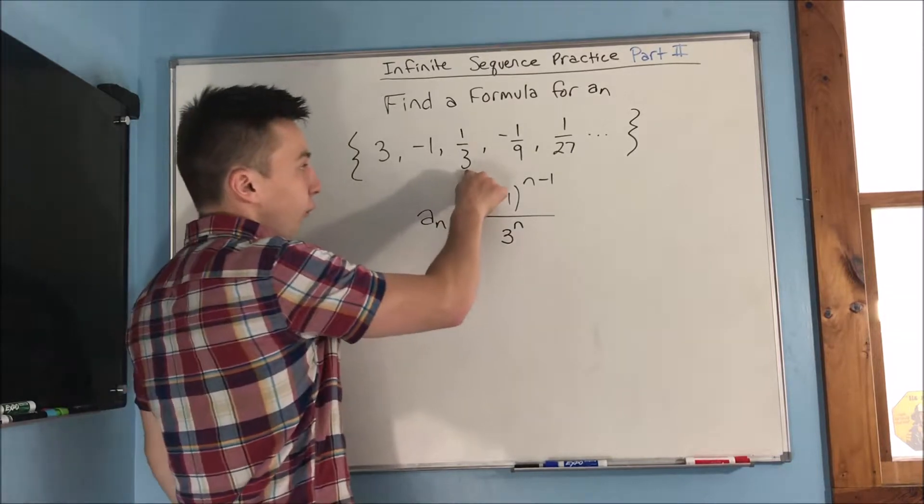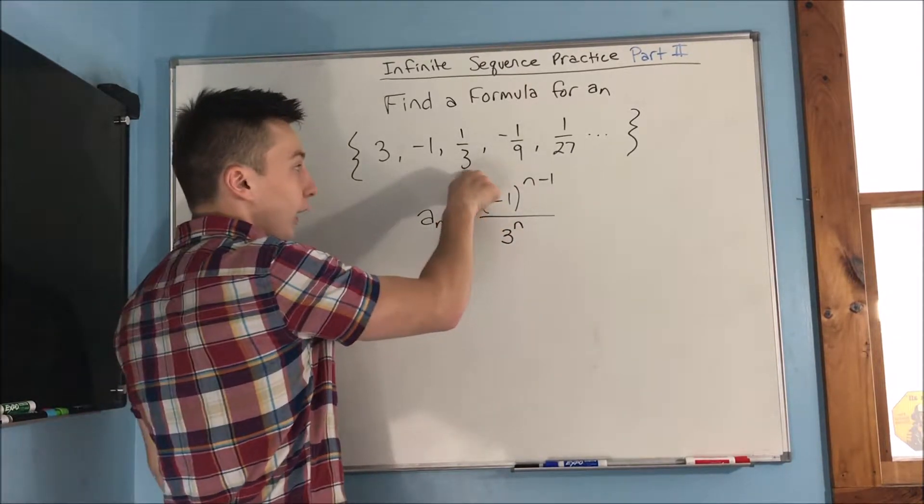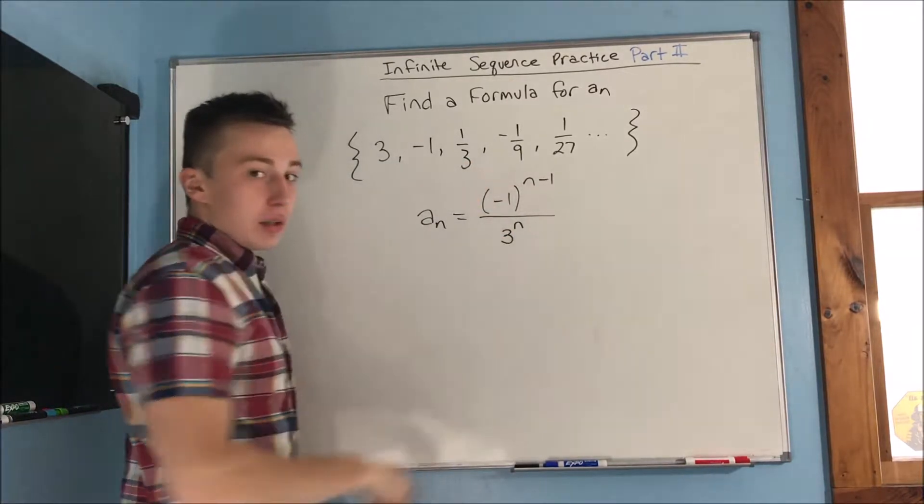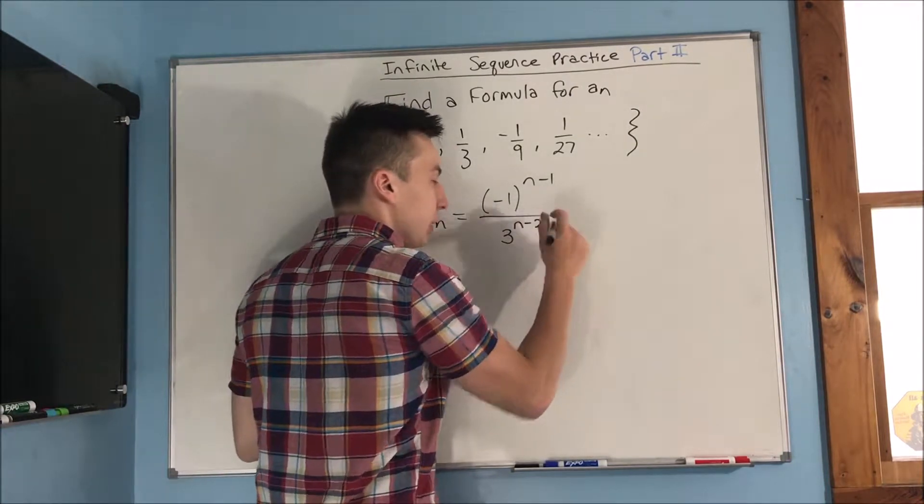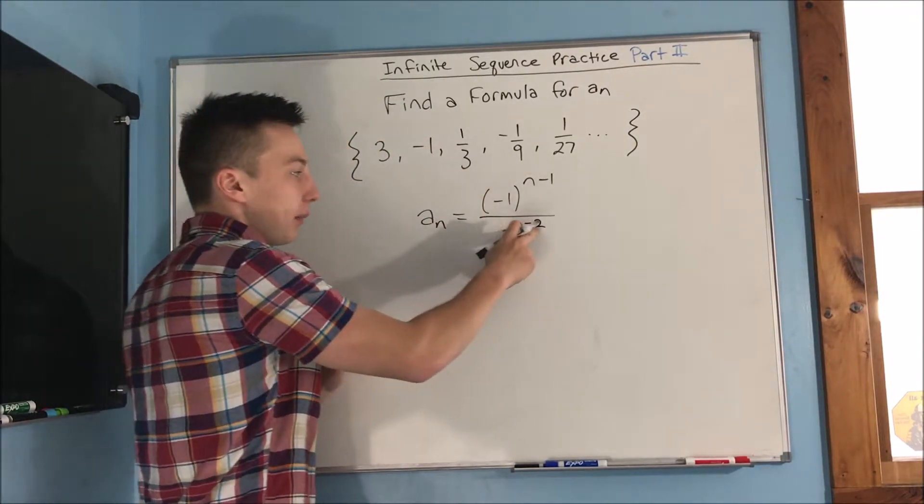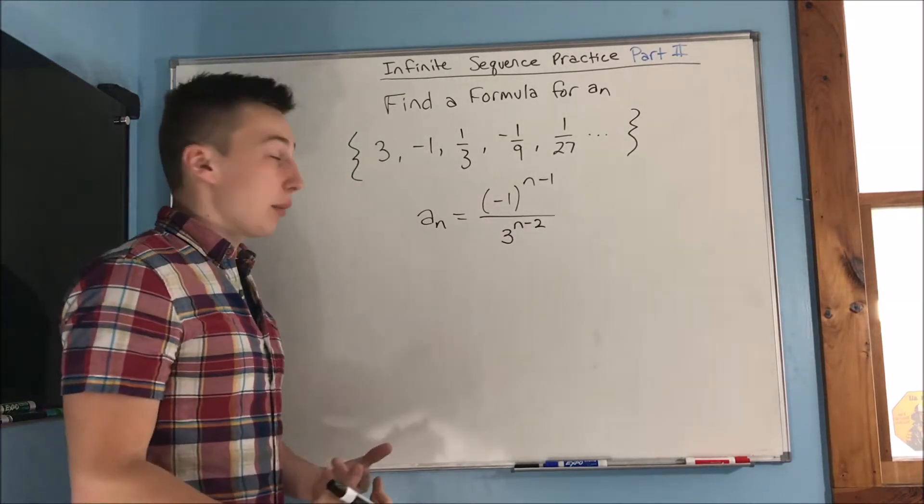For instance, this is the third term as I said, and we're getting three to the first power in the denominator. So that means that we could just do n minus two to get three minus two and that will give us one, which will give us a three in the denominator.